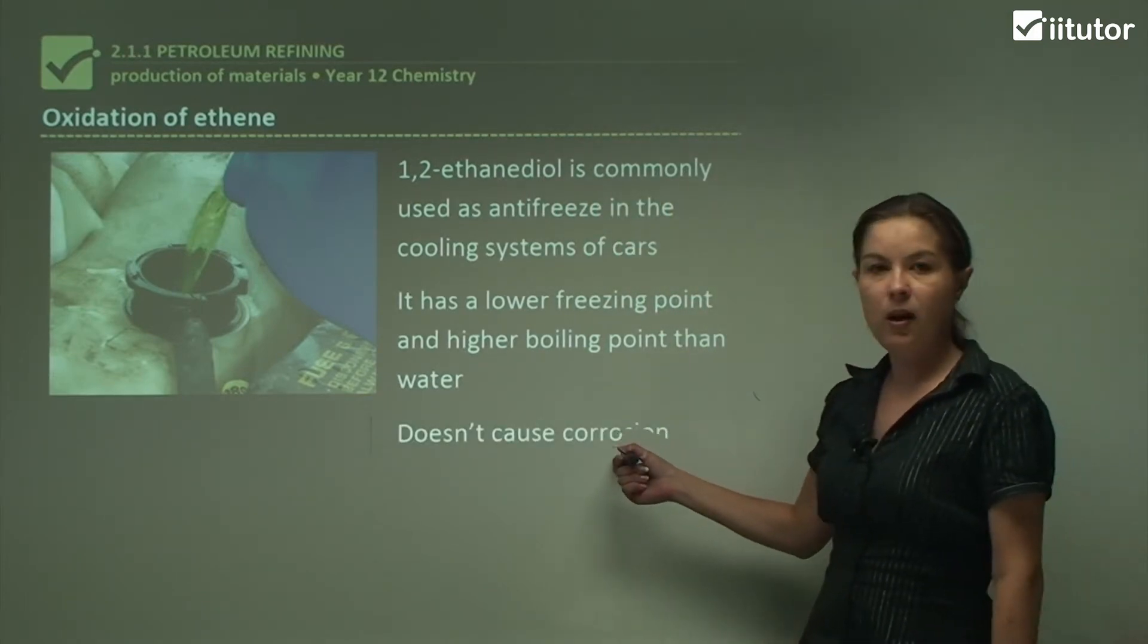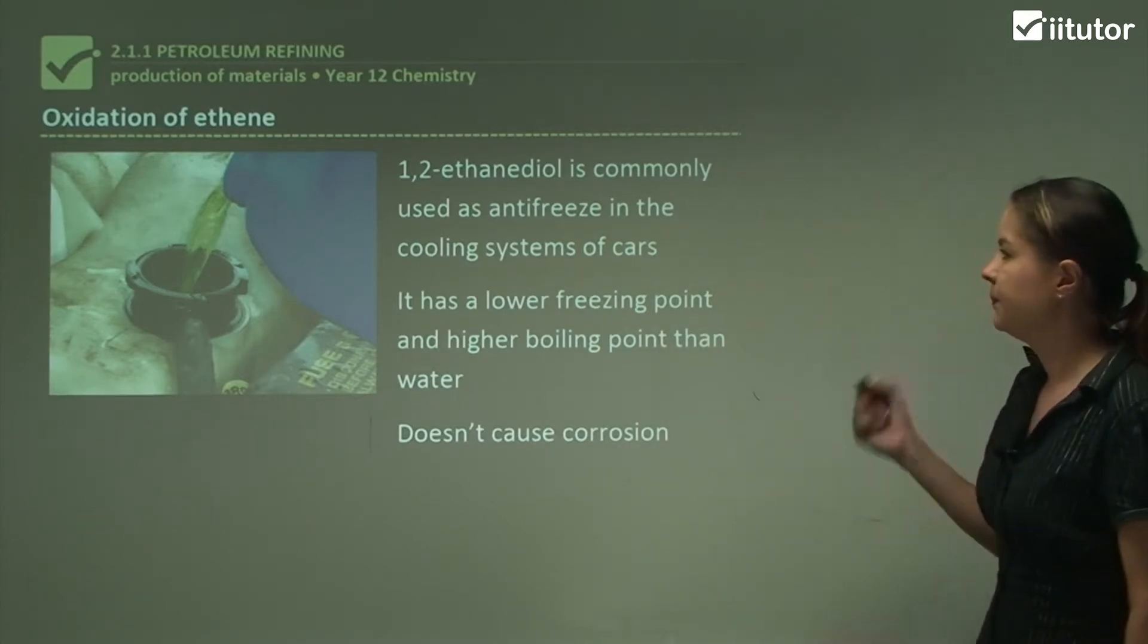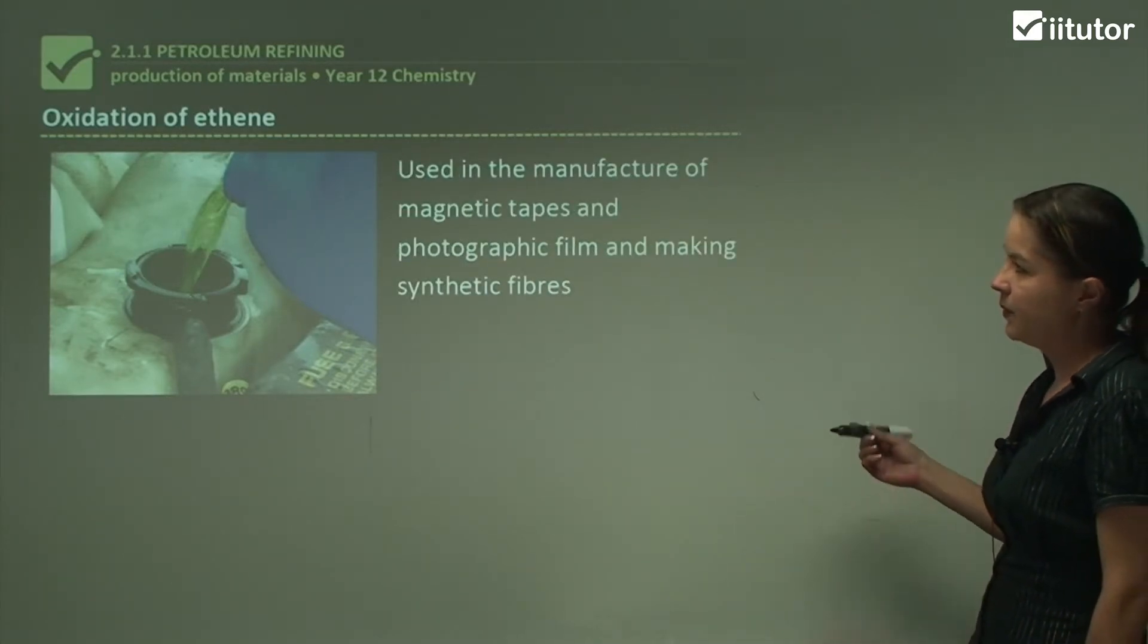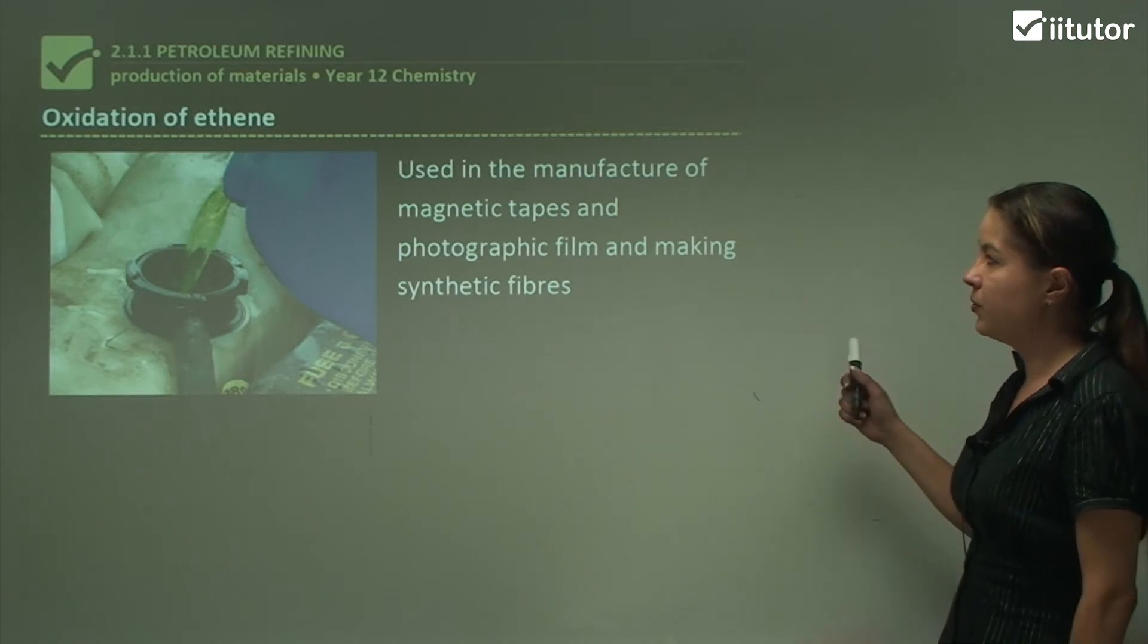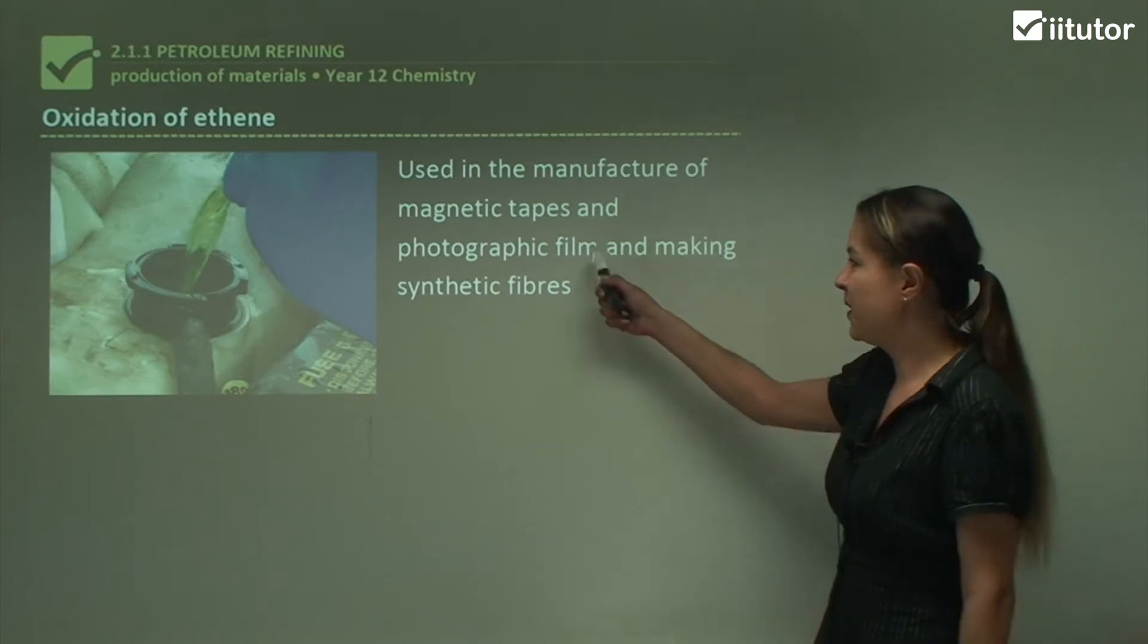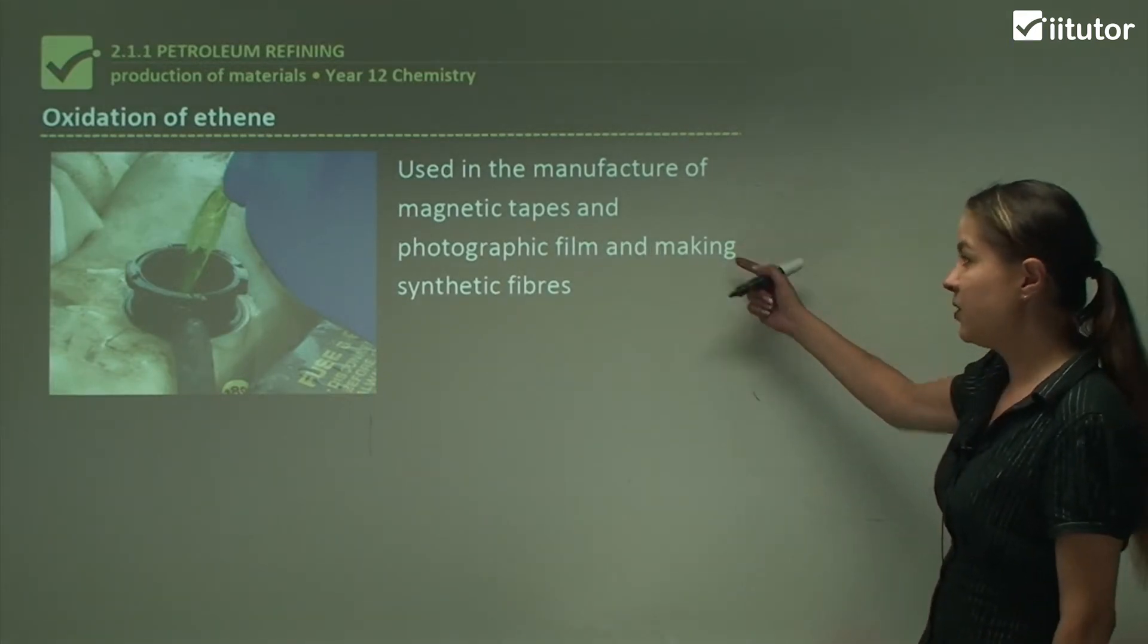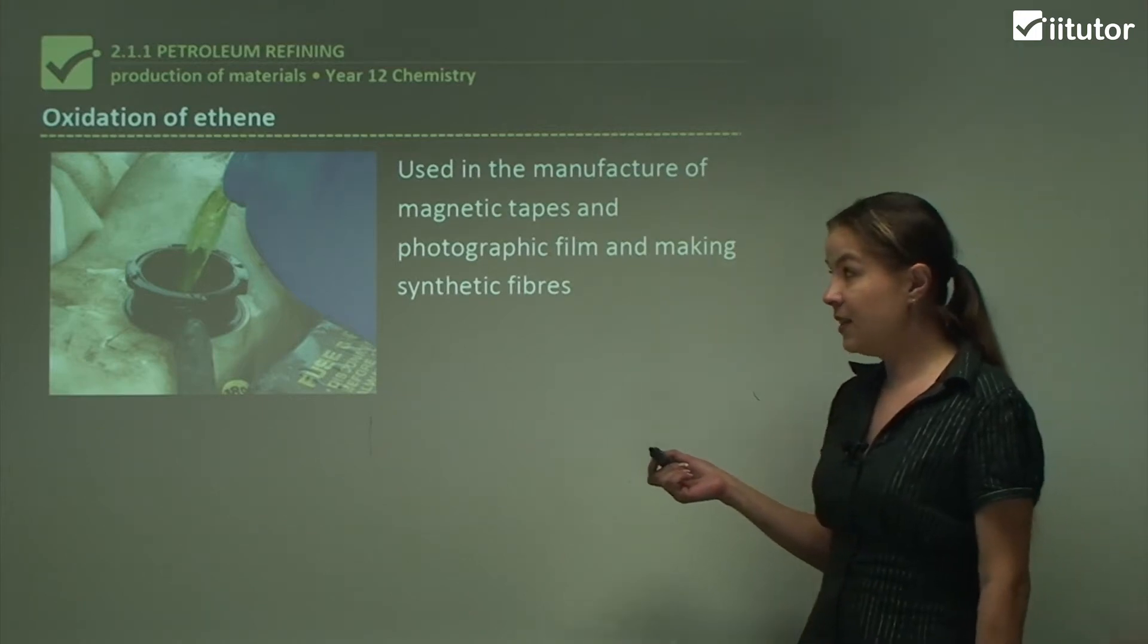Another great thing about ethylene glycol is that it doesn't cause corrosion, so it won't ruin your engine. Ethylene glycol is also used in the manufacture of magnetic tapes and photographic film, although I guess we don't use too much of that anymore in this digital day and age. And it's also used for making synthetic fibres.